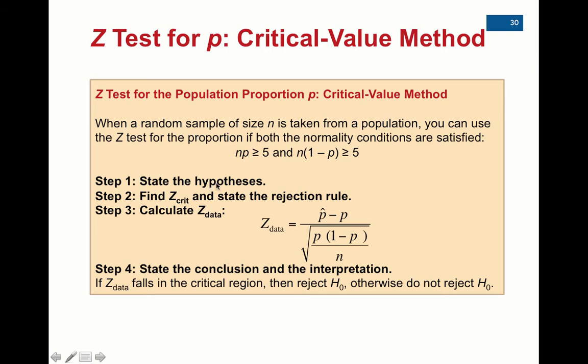Step one, we always state the hypothesis. For the critical value, we look up z-crit first using alpha. We use inverse norm for that. And then on step three, we calculate z-data, and this is the new formula.